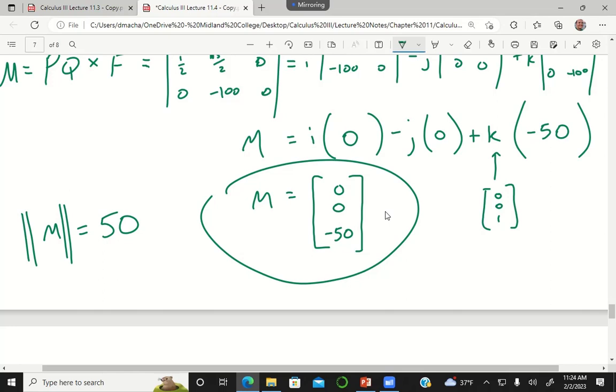The norm is telling you about the length or the magnitude of the vector. In this case, the whole vector is just in one direction, so it was really easy to see what the magnitude was going to be.